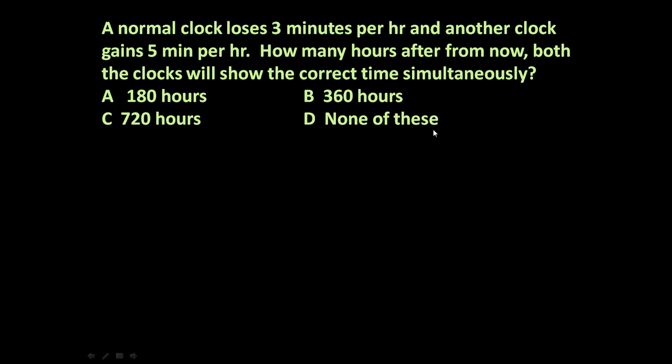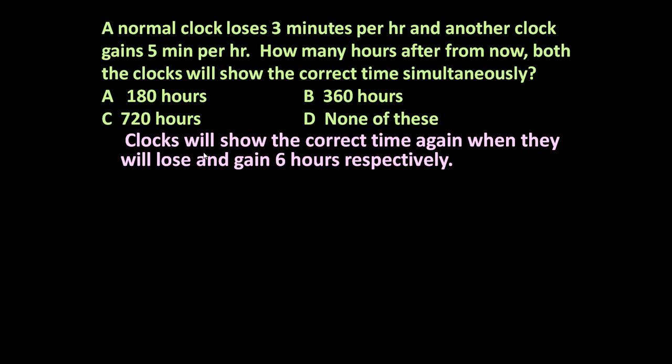We have to find out the correct answer. There are two clocks - one is losing three minutes per hour and another is gaining five minutes per hour. The clocks will show the correct time again when they lose and gain six hours respectively.